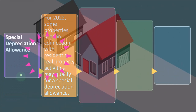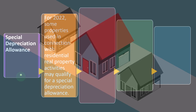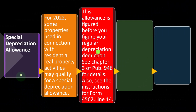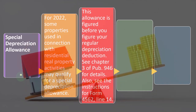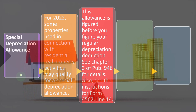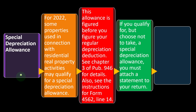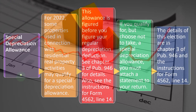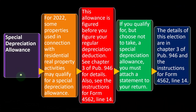Special depreciation allowance for 2022: some properties used in connection with residential real property activities may qualify for a special depreciation allowance. This allowance is figured before you figure your regular depreciation deduction. See chapter three of Publication 946 for details, and also the instructions for Form 4562, line 14. If you qualify for but choose not to take a special depreciation allowance, you must attach a statement to your return.